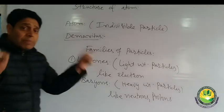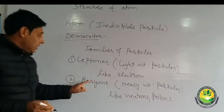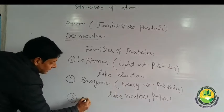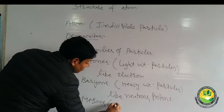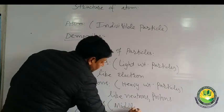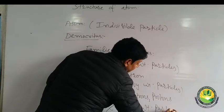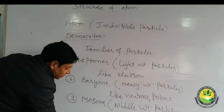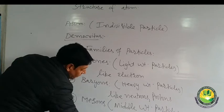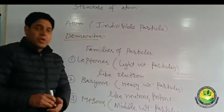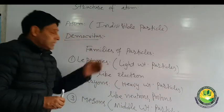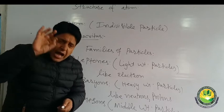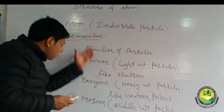Between these two extremes — leptons on one side and baryons on the other — there is another family called mesons, which are middleweight particles, or particles of intermediate mass. There are different types of mesons, like mu mesons, pi mesons, et cetera. Today we say that atom in itself is a world — atom contains an unlimited number of particles; there are families of particles in atom.